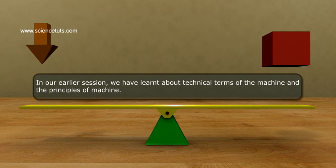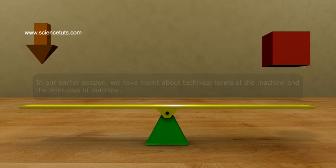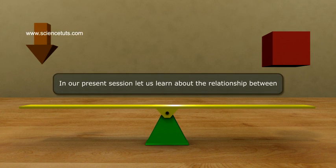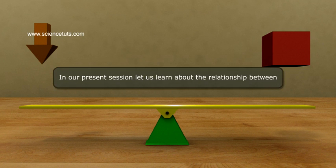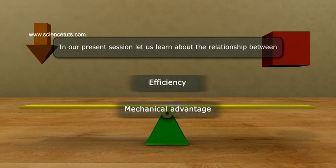In our earlier session, we have learned about technical terms of the machine and the principles of machine. In our present session, let us learn about the relationship between efficiency, mechanical advantage, and velocity ratio.